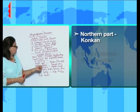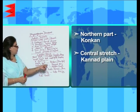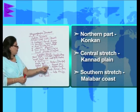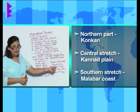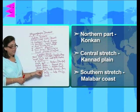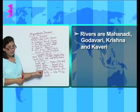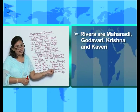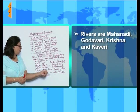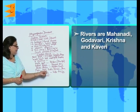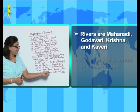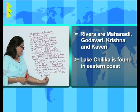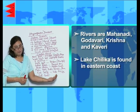Then we have the central stretch which is the Kannad plain, and the southern stretch which is the Malabar coast. The great rivers flowing here are the Mahanadi, Godavari, Krishna, and Kaveri, which form deltas. Lake Chilika is found on the eastern coast.